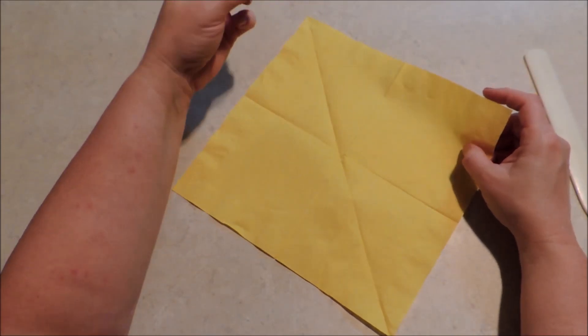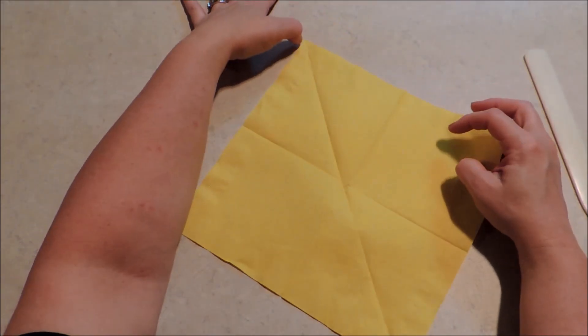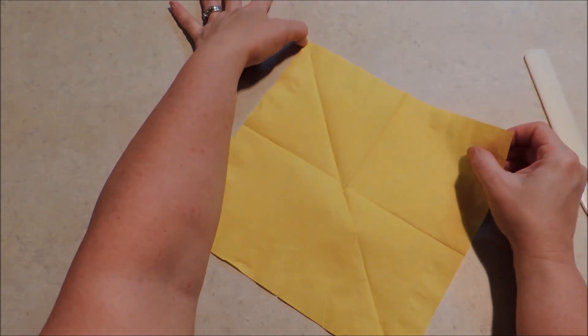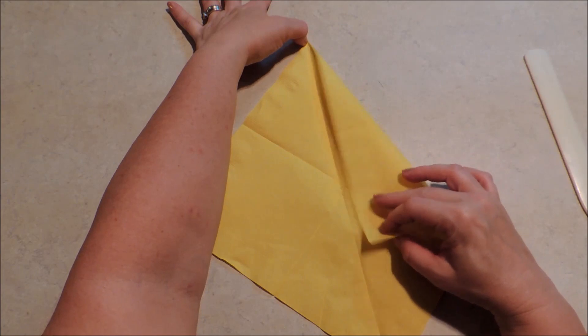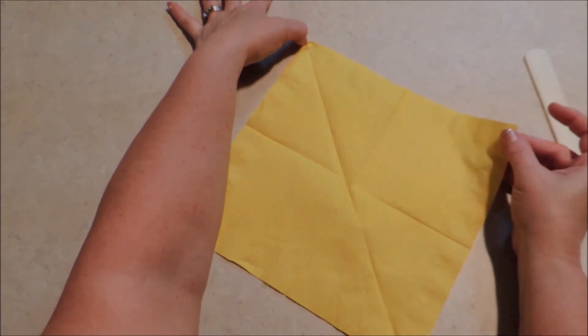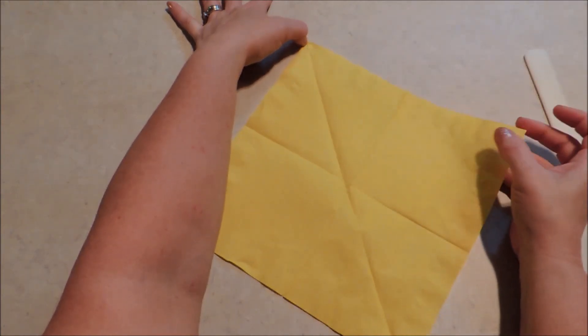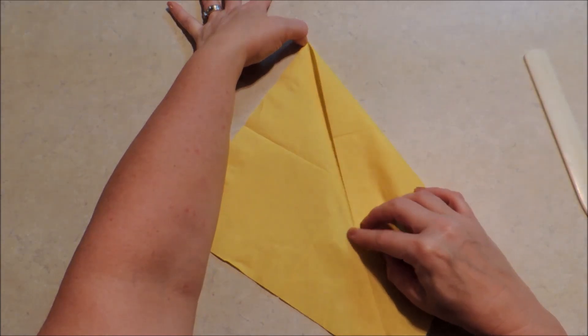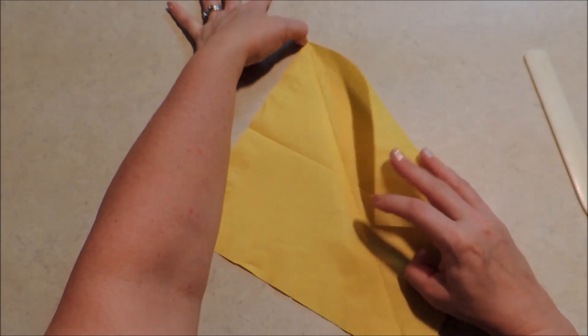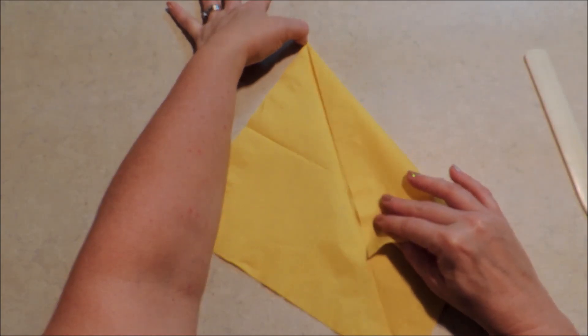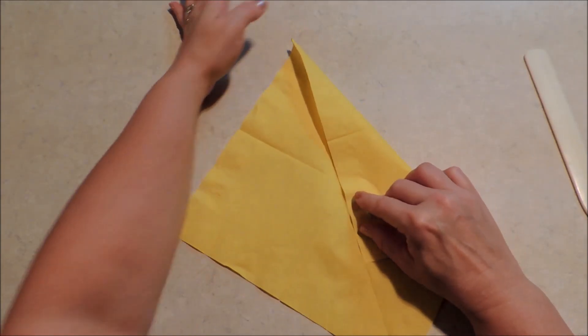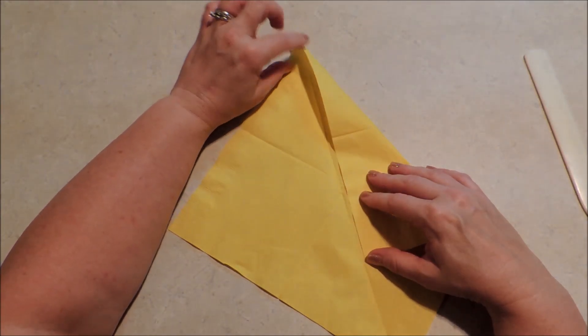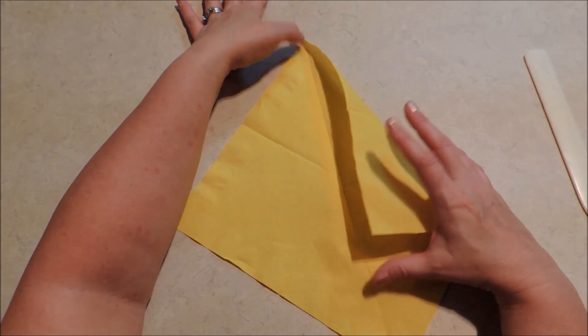So from there, I'm going to use my thumbnail to kind of hold the point there so that I know I get a really sharp tip when I make that fold. And I'm just going to fold this right corner from the top until that line meets with the line up the center. Again, making sure that that tip is very sharp because that's going to be the tip of our lightning bolt in the end.